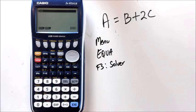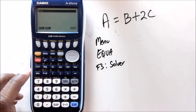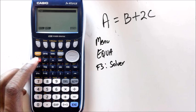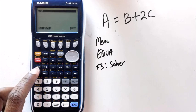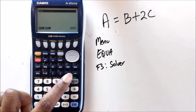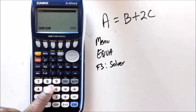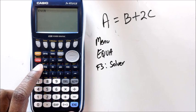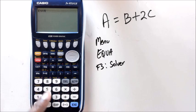So the button that we're going to predominantly use is the Alpha button. Alpha actually unlocks all those red letters that you see above in each one of those buttons in your calculator. So I'm going to put Alpha A. Now I need to find Equals.